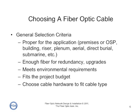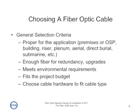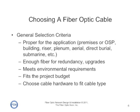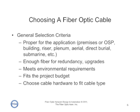In choosing a cable, the primary thing we have to look for is a cable appropriate to the application — whether it's a premises cable that's flame retardant, or an outside plant cable that resists moisture and rodent penetration. There are lots of different categories of cable to consider, and we want to make sure it includes enough fiber for redundancy and future upgrades, meets all environmental specifications, and fits the budget. Once we choose the cable, we choose the cable hardware to fit the cable type.